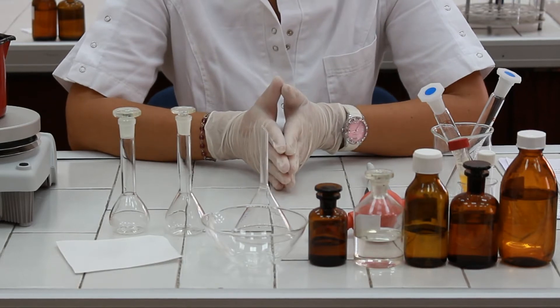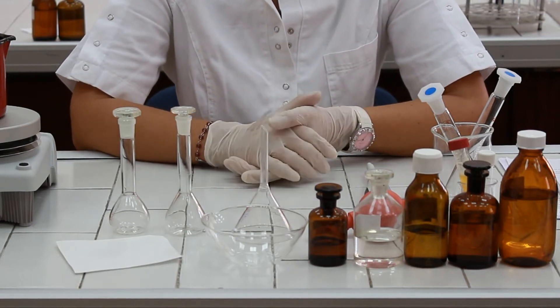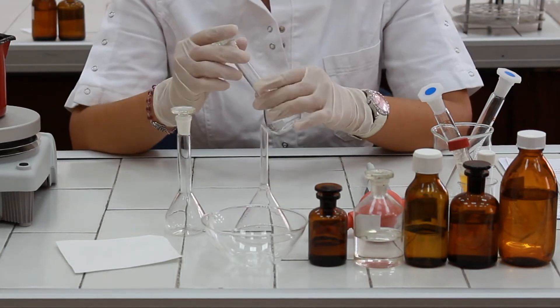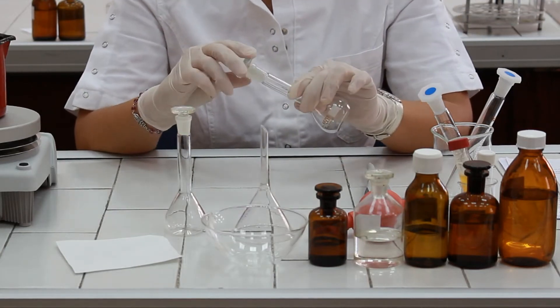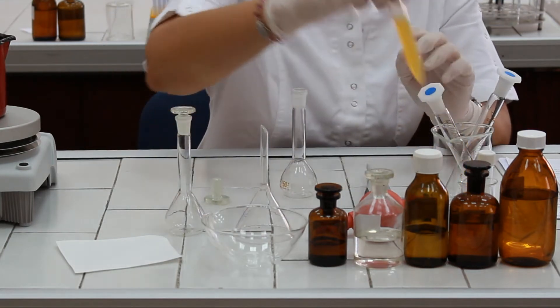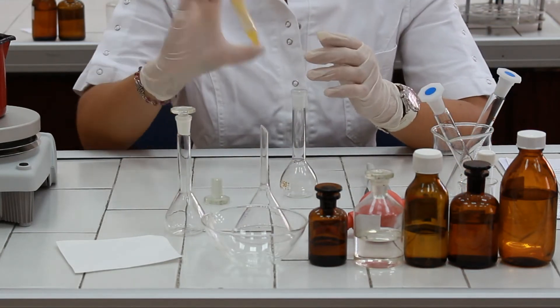At the beginning of the experiment, the first step is to extract cholesterol from the blood plasma. In order to do this, we are going to take the volumetric flask and pipette one milliliter of blood plasma sample.